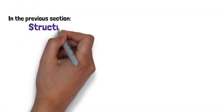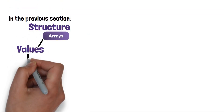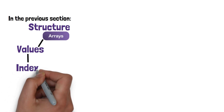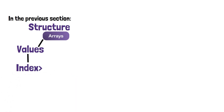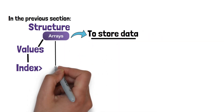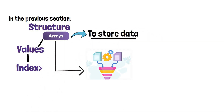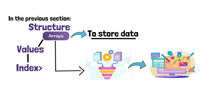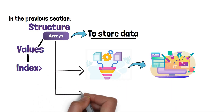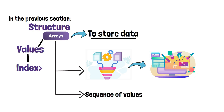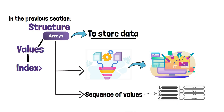In the previous section, we discussed the basic structure of arrays and how values can be accessed using an index. In this section, we will delve into the different ways arrays can be used to store data. Arrays are used to store collections of data, and they can be used in a variety of applications. One of the most common uses of arrays is to store a sequence of values, such as a list of numbers or a list of names.